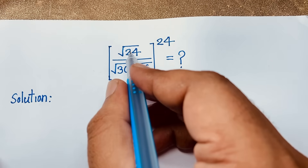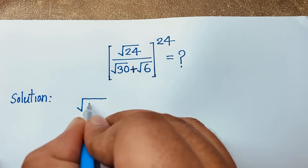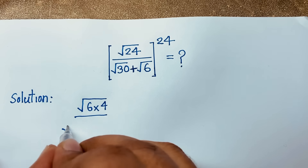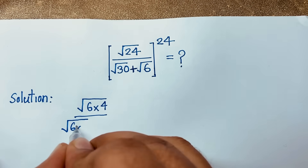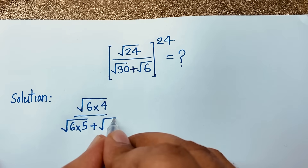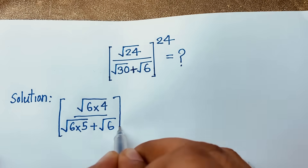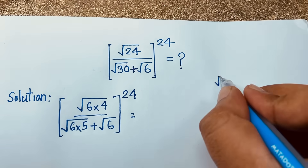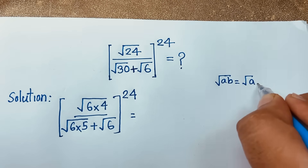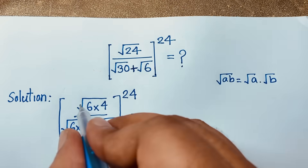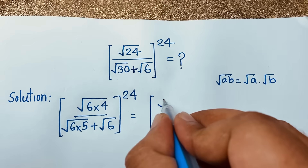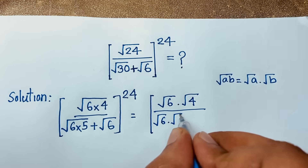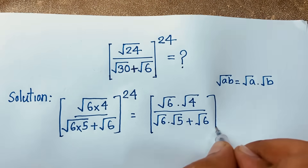Here is square root 24. I can say square root 24 equals square root of 6 times 4, because 6 times 4 equals 24. And here is square root 30, which equals square root of 6 times 5. Plus here is square root 6, whole to the power 24. Now, using the formula square root(ab) = square root(a) times square root(b), this expression becomes square root 6 times square root 4, over square root 6 times square root 5 plus square root 6, whole to the power 24.